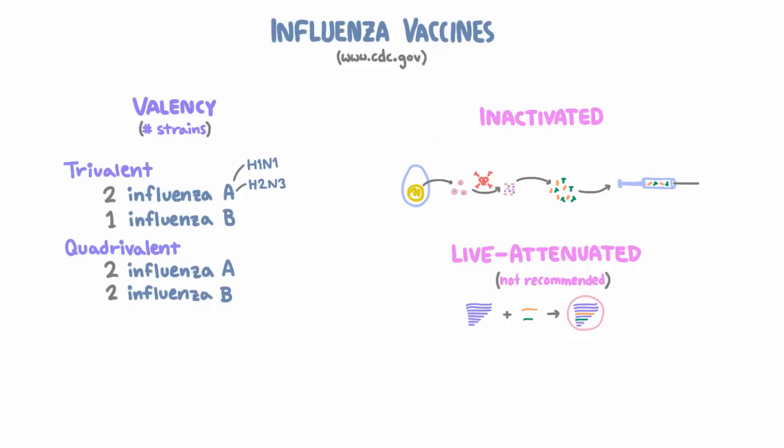In what way is it attenuated? The master strain is grown at cold temperatures so that it evolves to replicate only in the colder temperatures of the nasal respiratory tract. That's why this vaccine is given as a nasal spray.